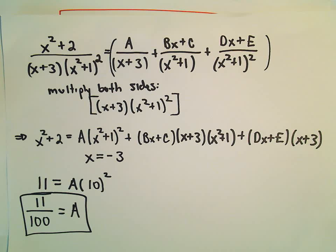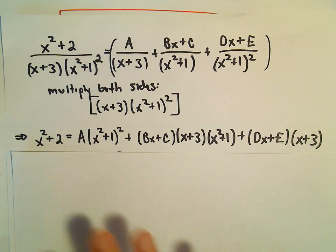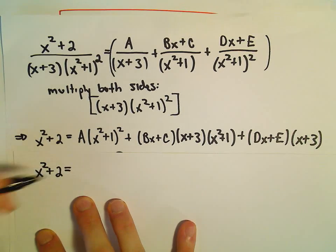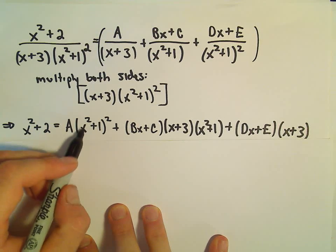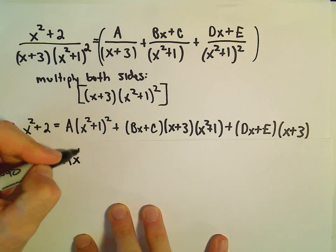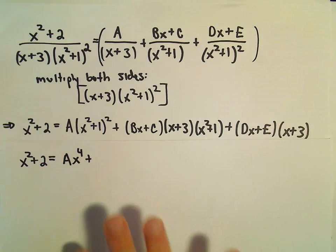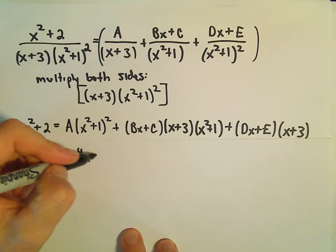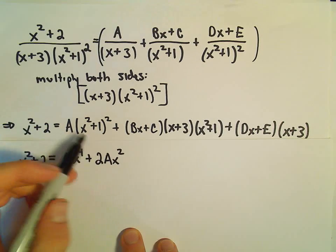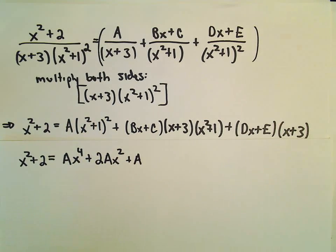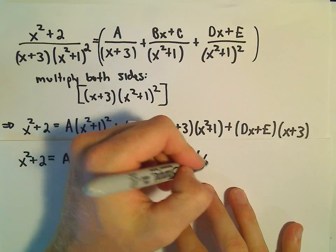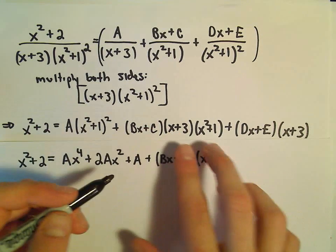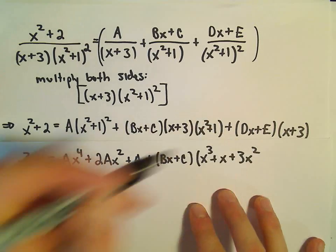To figure out the rest, I'm going to use equating coefficients — it's going to be a long process. If we multiply out x squared plus 1 squared we get x to the fourth plus 2x squared plus 1. So we'd have A times x to the fourth, then 2Ax squared, then A. Then for Bx plus C distributed over x cubed plus 3x squared plus x plus 3.